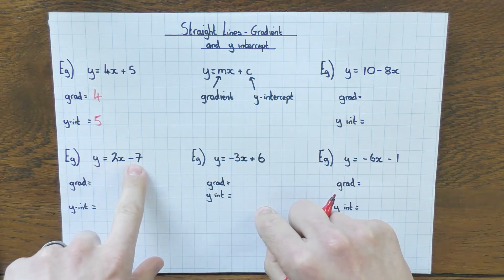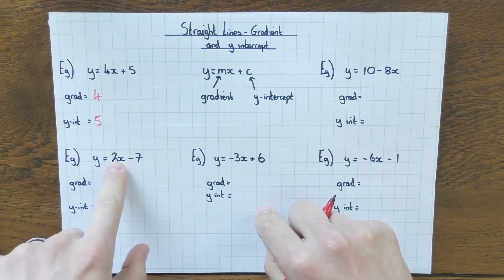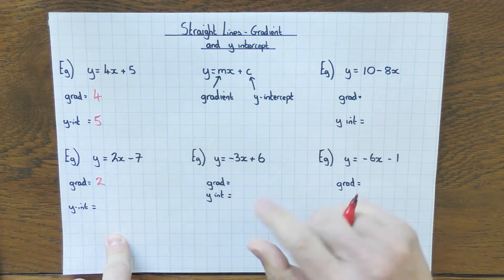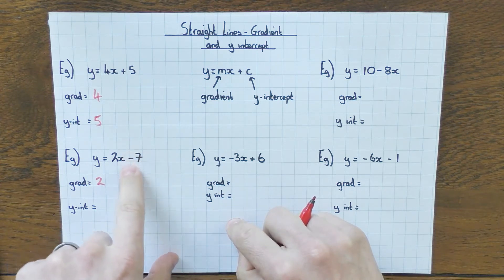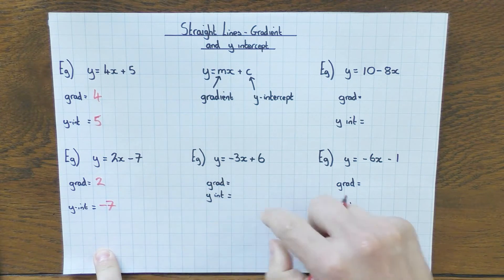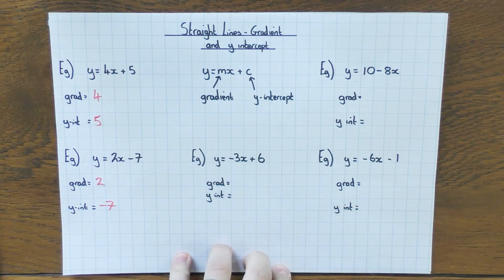It's the same thing here: y equals 2x minus 7. The gradient is whatever is in front of the x, which is 2. No, it's not 2x, it's just a number, so 2. y-intercept, I do include the minus 7. We don't just say 7. It is minus 7, crosses the y-axis at minus 7.